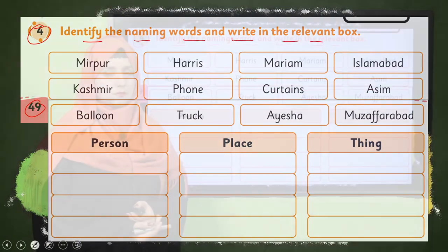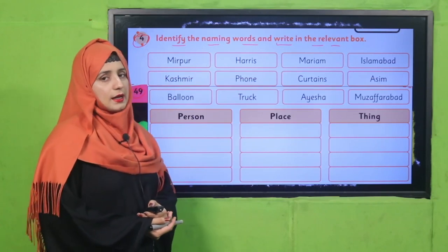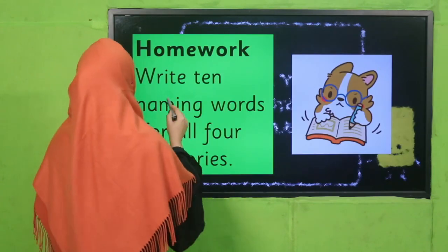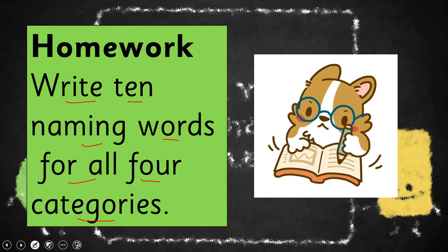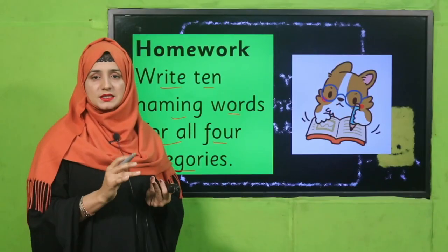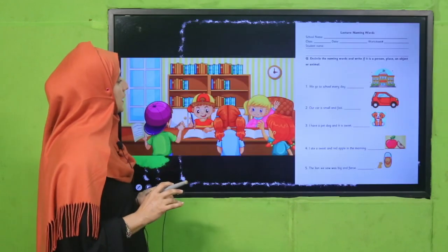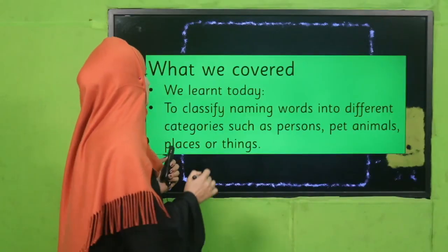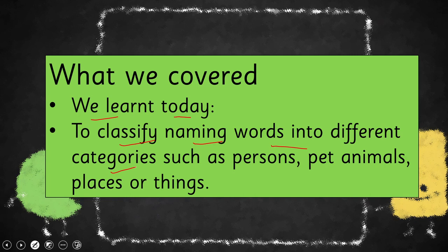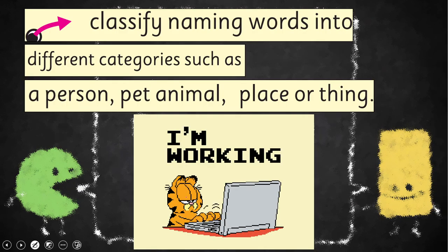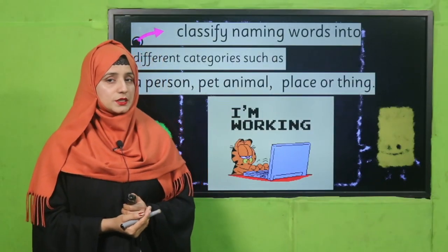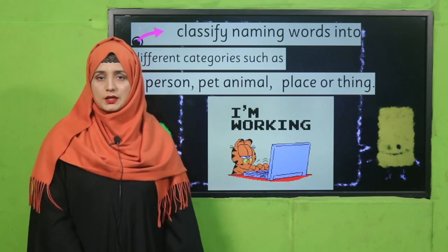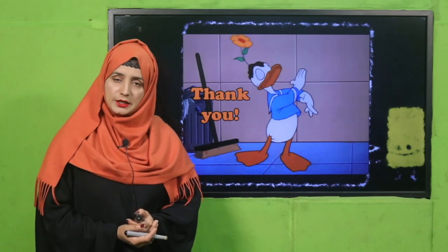Welcome back, good job! I hope you are now able to categorize different naming words according to person, place, and thing. For homework, write 10 naming words from all four categories — person, place, pet animals, and things. My dear teacher, a worksheet link is given below — print it and provide it to your students. Today we learned to classify naming words into different categories such as person, pet animals, places, or things. I hope you enjoyed today's lecture. Tomorrow we will be back with a new lecture. Till then, stay blessed. Thank you so much.